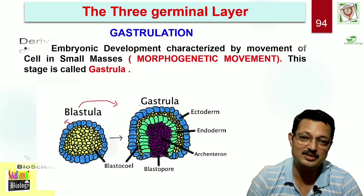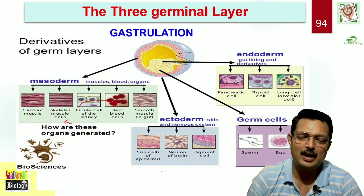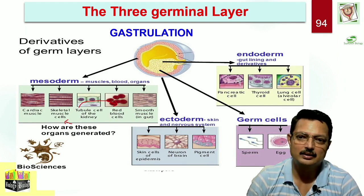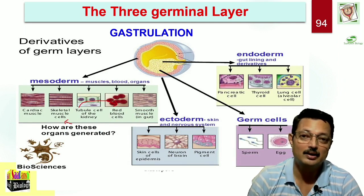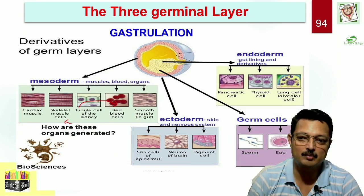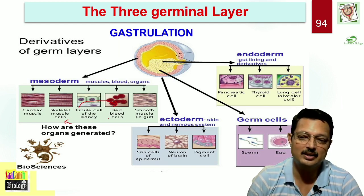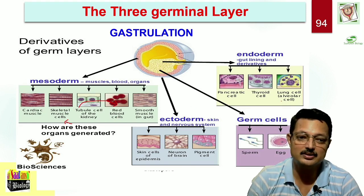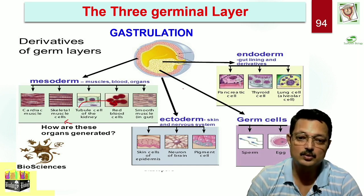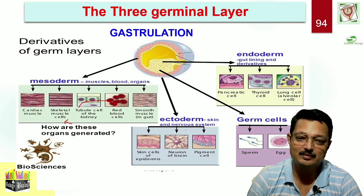As a result of gastrulation, three primary germ layers are formed: ectoderm, mesoderm, and endoderm. Mesodermal derivatives include cardiac muscles, skeletal muscles, tubule cells of the kidney, red blood cells, and smooth muscles. Endoderm derivatives are pancreatic cells, thyroid cells, and lung cells. Ectoderm gives rise to skin and the nervous system. Germ cells — sperm and egg — are also derived from these early layers.